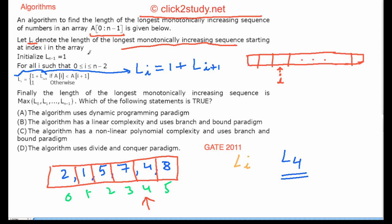L[4] is the length of the longest monotonically increasing sequence starting at index 4. Starting at 4, the next element is 8, which is greater than 4, so we have a monotonically increasing sequence from 4 to 8. So L[4] = 2. What about L[3]? L[3] starts at 7, and the next element is 4, which is less than 7, so the longest sequence from index 3 is just length 1.